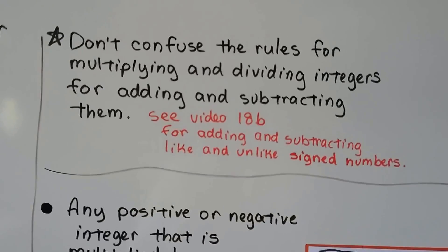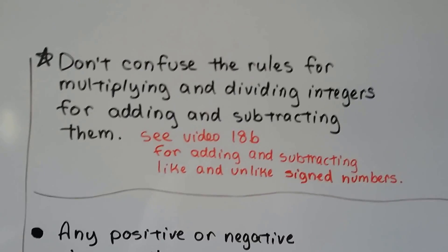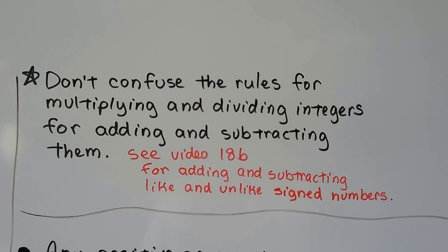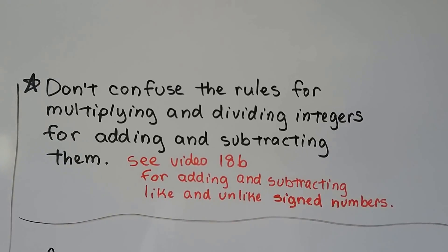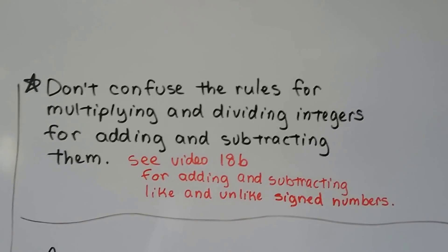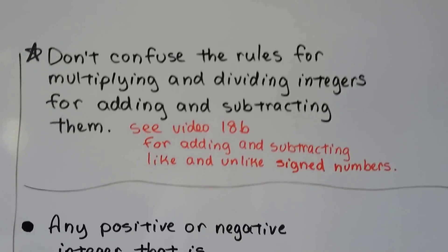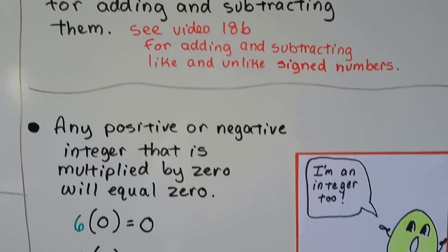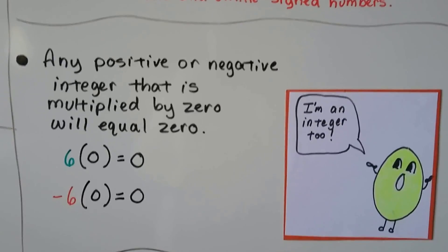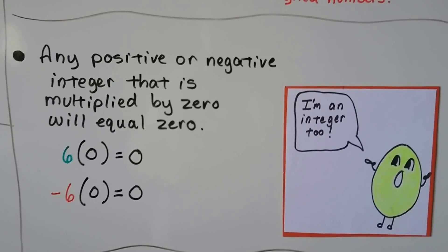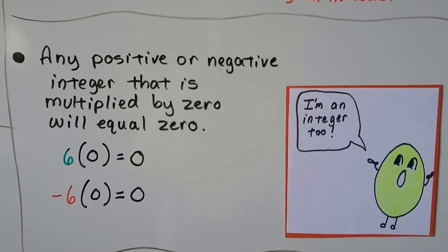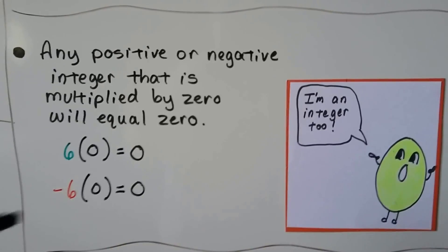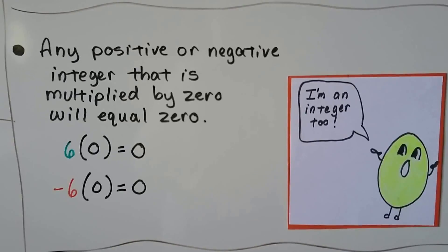Don't confuse the rules for multiplying and dividing integers with adding and subtracting them — that was covered in lesson 18b. The like and unlike sign rules are very different for addition and subtraction. Also remember that any positive or negative integer multiplied by 0 is going to equal 0. Anything multiplied by 0 is 0, whether it's positive or negative.